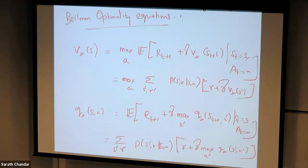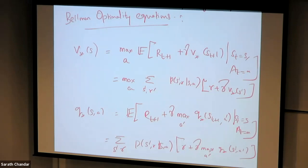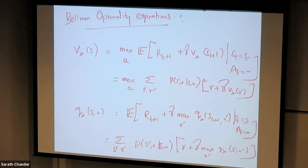One simple solution is to start with some initial values for all v or q values and iteratively update them based on the Bellman optimality equation. We know that when the left-hand side equals the right-hand side, we have achieved the optimal policy — it is only for the optimal value functions that this equation holds. So if we keep updating our value functions until we reach equivalence, we have converged to the optimal value function.